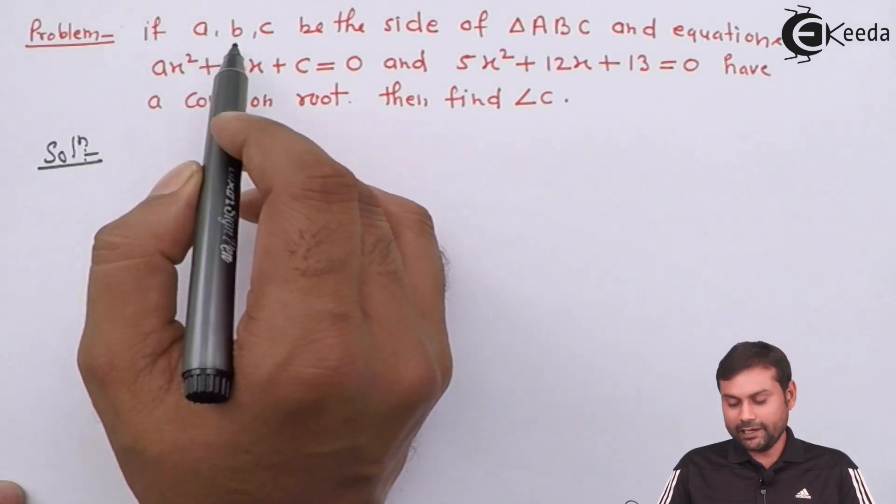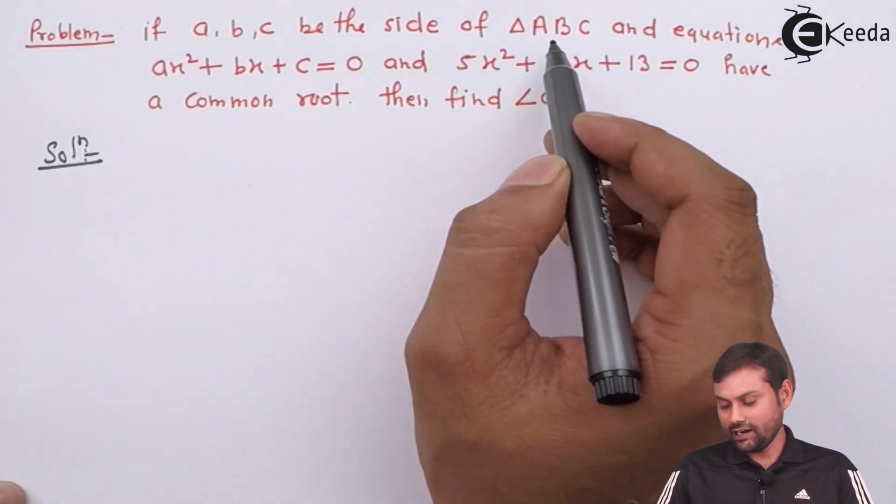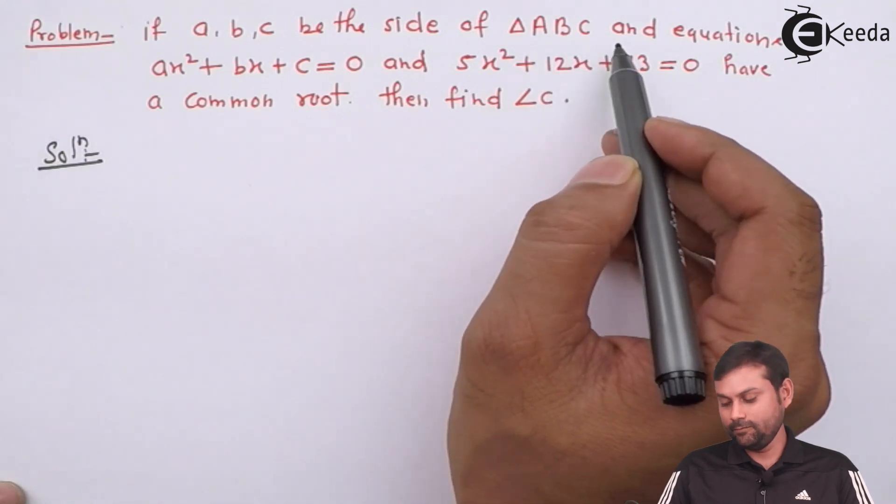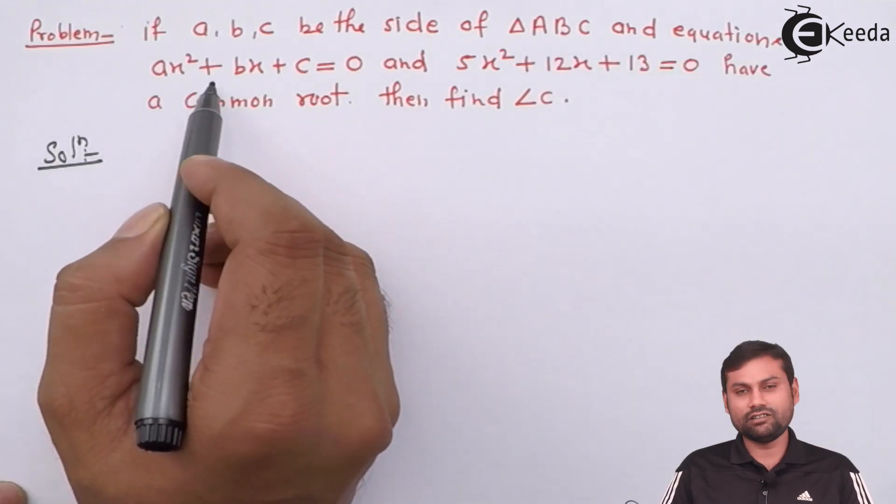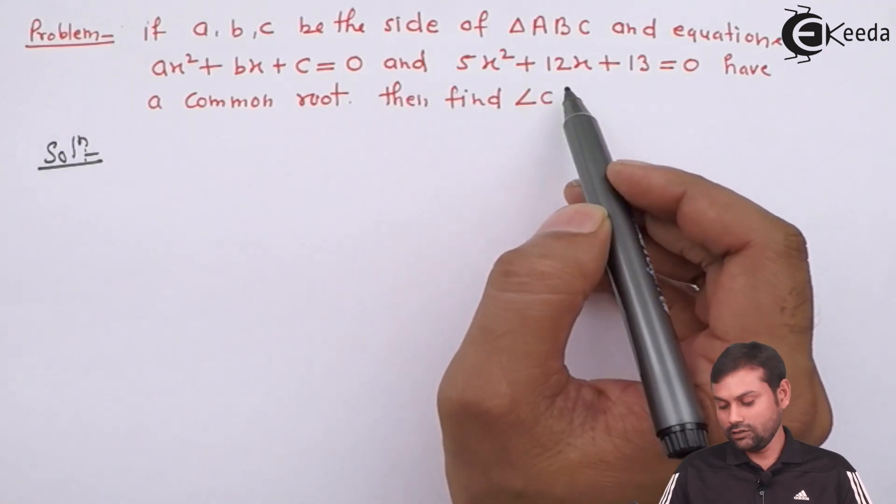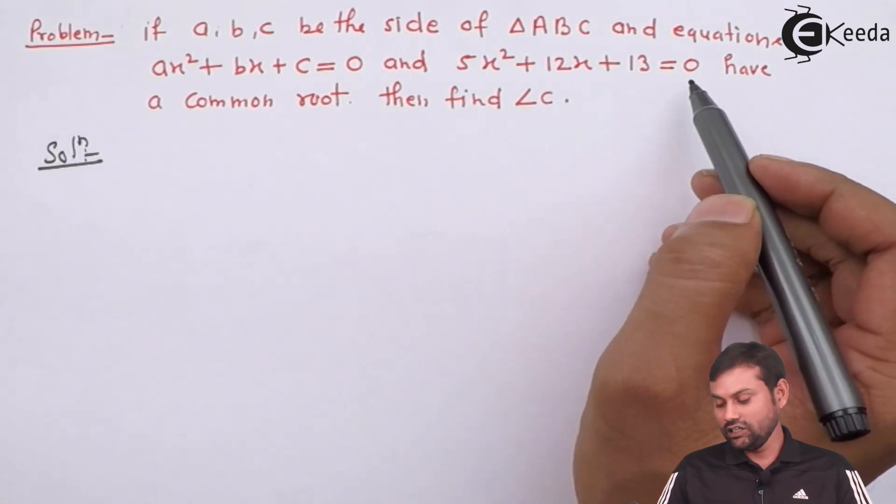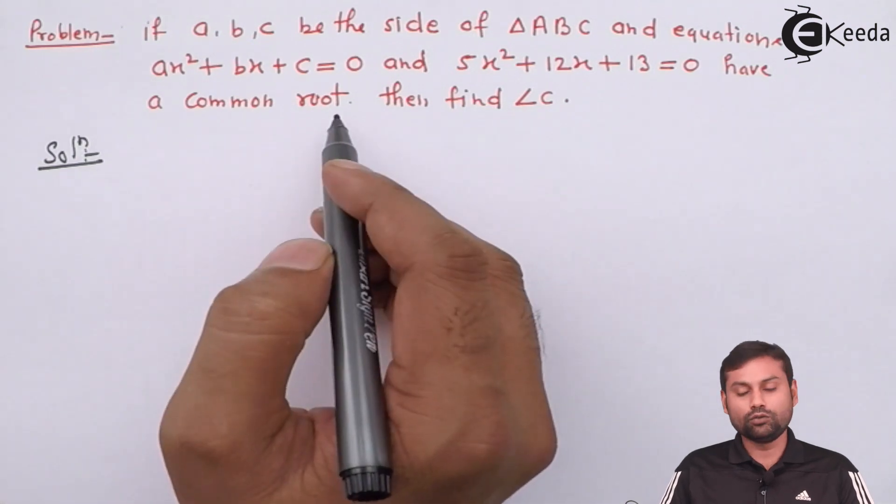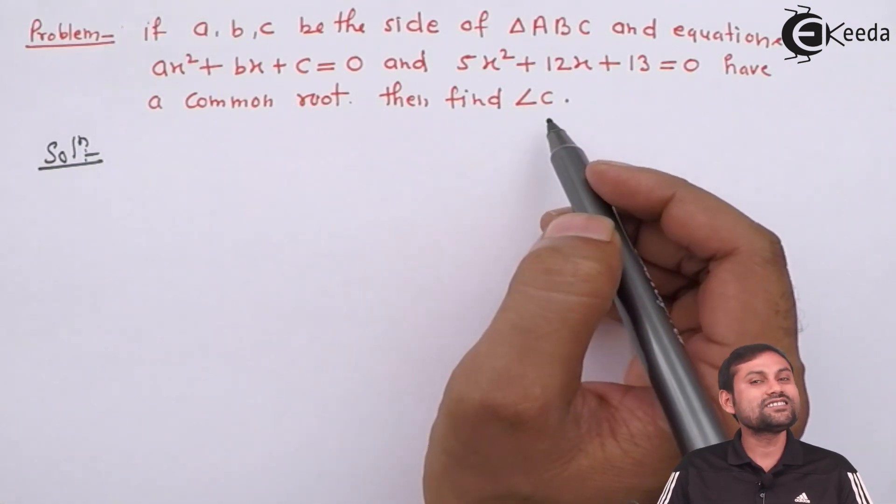If ABC with the side of triangle ABC and equations AX square plus BX plus C equals to 0 and 5X square plus 12X plus 13 equals to 0 have a common root, then find angle C.